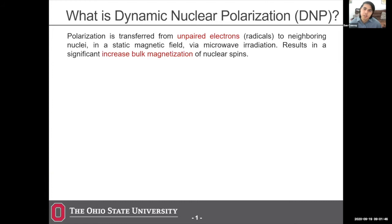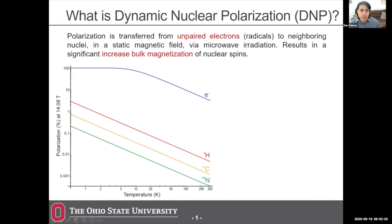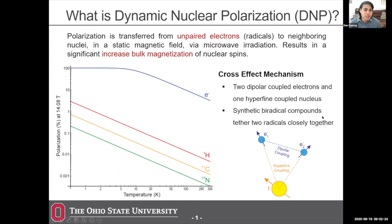DNP is when we have a polarization transfer from unpaired electrons in a sample to nearby nuclei, achieved using microwave radiation. This increases the bulk magnetization of the nuclear spins in a given sample. The polarization at any given temperature for free electrons is going to be much higher than for biologically relevant nuclei — from protons to carbon-13 and nitrogen-15 — due to the relative gyromagnetic ratios.